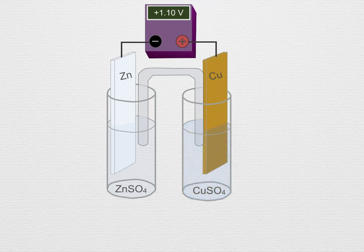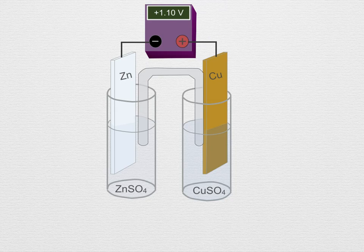We would also observe over time that the blue color in the copper electrode solution would become fainter and we might notice a deposit of finely divided copper metal on the electrode. The copper was being reduced.